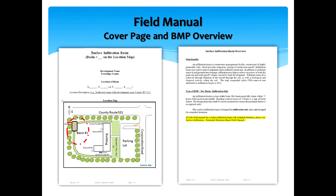The cover page shows the location of the BMP. The design engineer should provide a location map and the coordinates to locate the BMP. The location maps are particularly important for responsible parties that are new to the development site or for BMPs that are not easily seen or noticed, such as underground BMPs or swales. The BMP overview section provides a brief introduction describing how the BMP should function so that the responsible party will have a general idea of what to expect during the inspections.